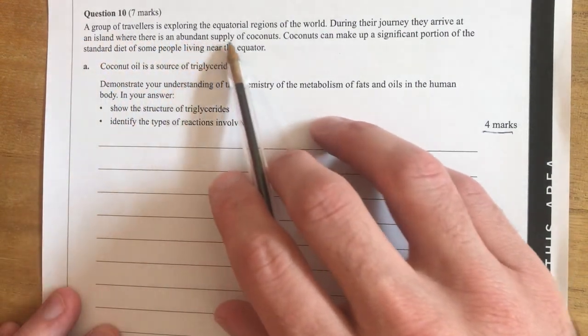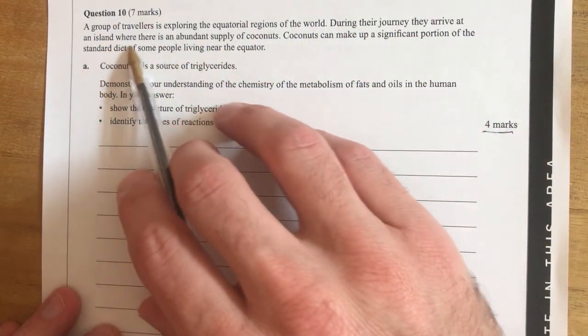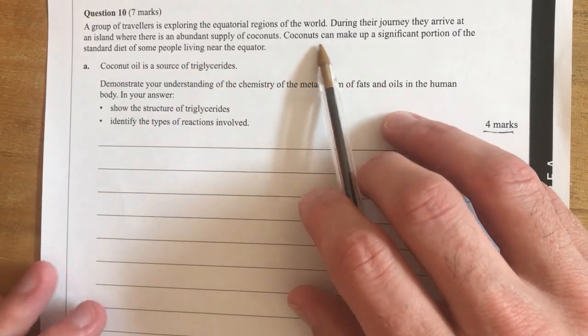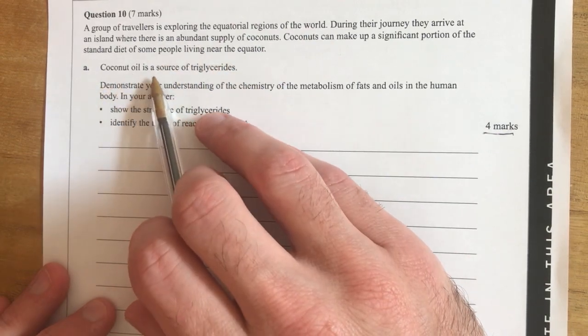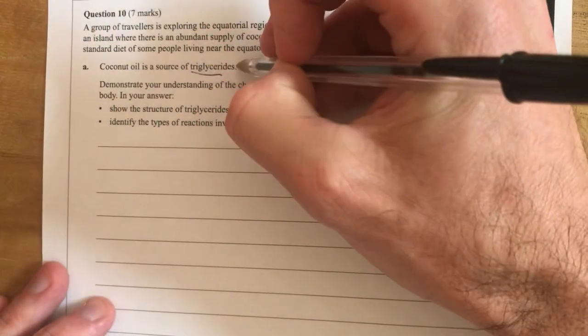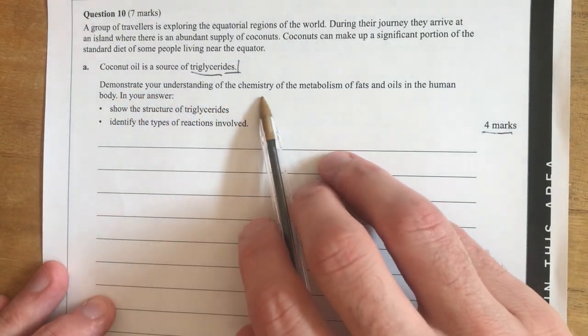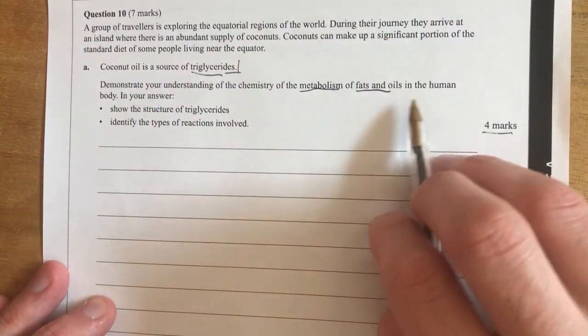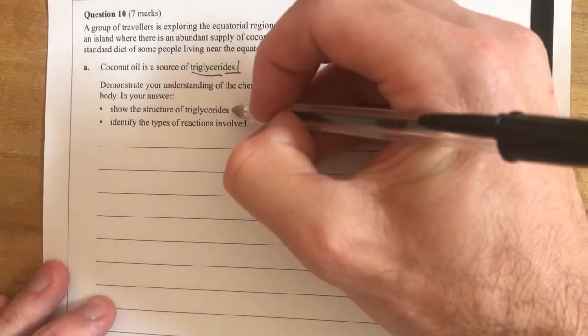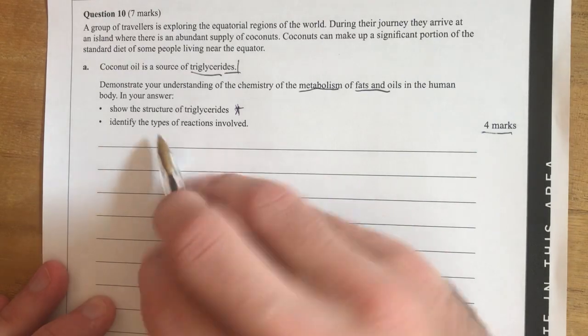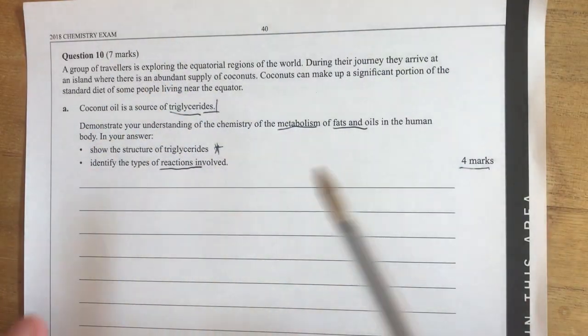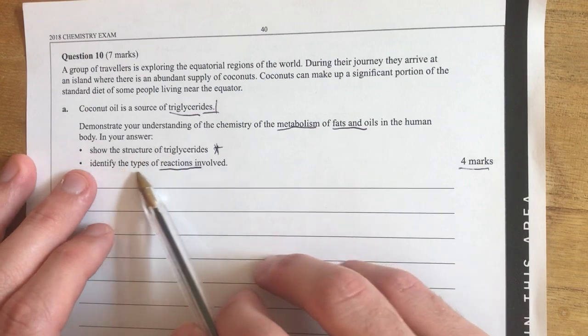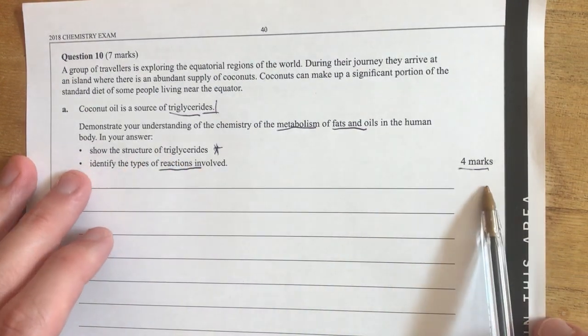A group of travelers exploring arrive at an island where there is an abundant supply of coconuts. Coconuts are made up of a significant portion of the standard diet for some people living near the equator. Coconut oil is the source of triglycerides so we're talking about triglycerides. Demonstrate your understanding of the chemistry of the metabolism of fats and oils in the human body. In your answer explain or show the structure of triglycerides and identify the types of reactions involved. So all this space here is all you need to do is show me the structure of triglyceride then write what happens in terms of chemical reactions and it's only worth four marks.